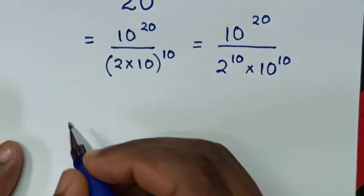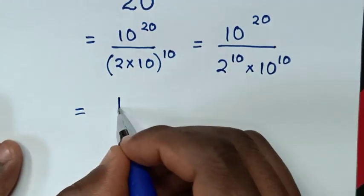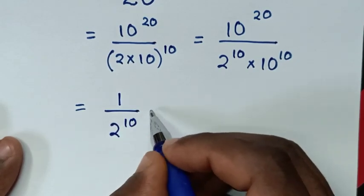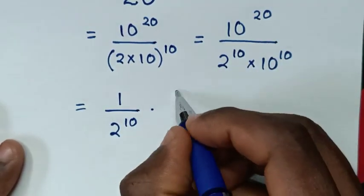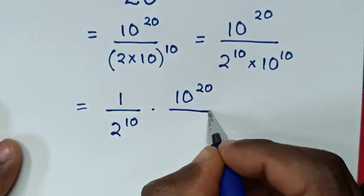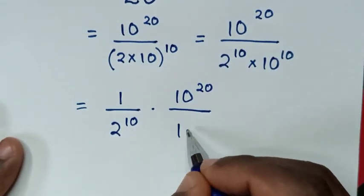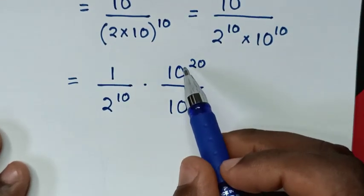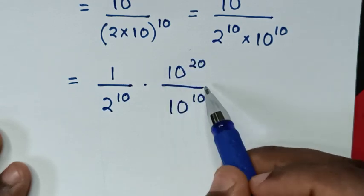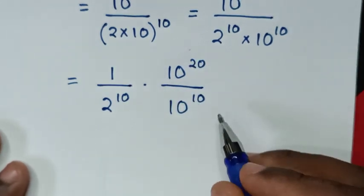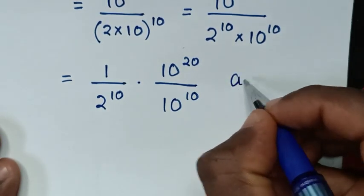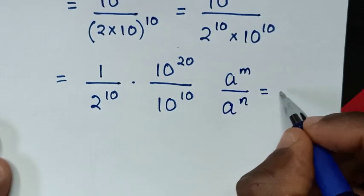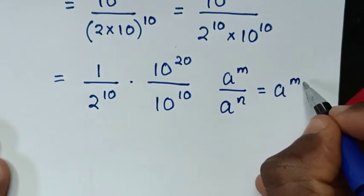In the next step, it will be equal to 1 over this exponent, which is 2 power of 10, then times this exponent 10 power of 20, then over this 10 power of 10. From here, the division of exponents 10 power of 20 over 10 power of 10 will apply the quotient rule, which is A power of M over A power of N is equal to A power of M minus N.